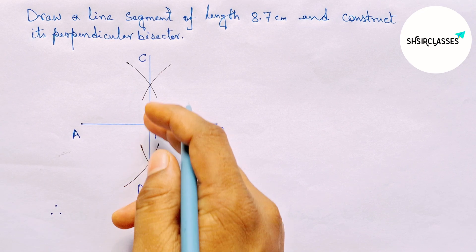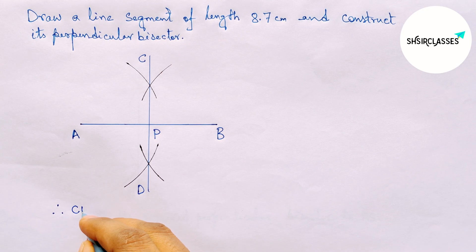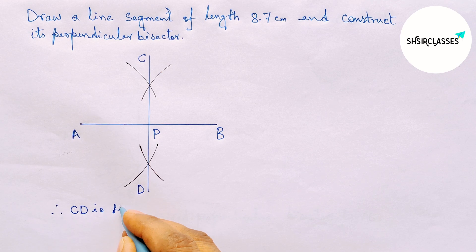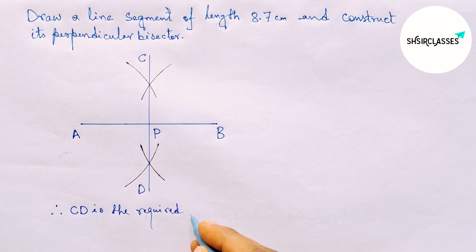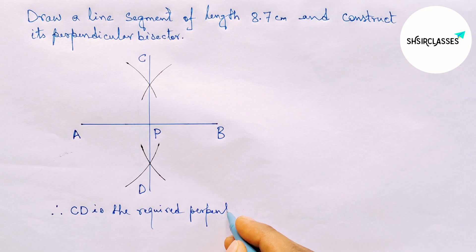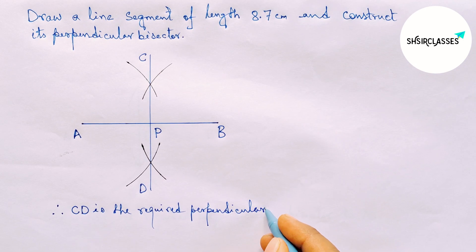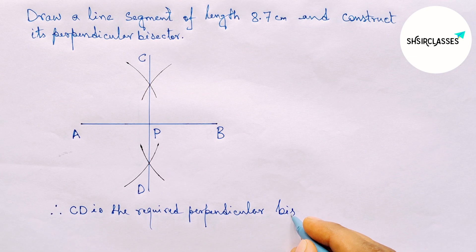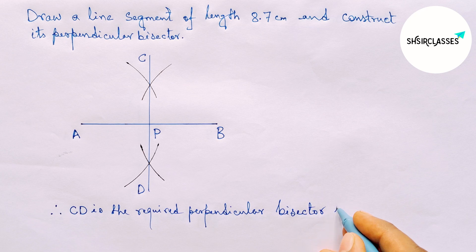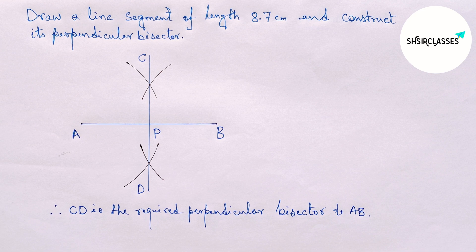Therefore, CD is the required perpendicular bisector to the line AB equal 8.7 cm. And by this way you can construct a perpendicular bisector to a given line.